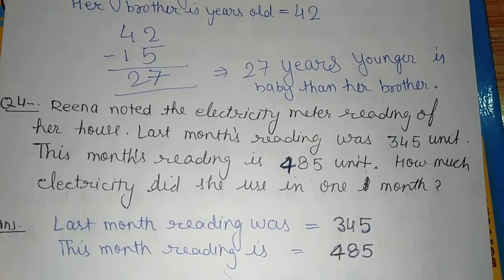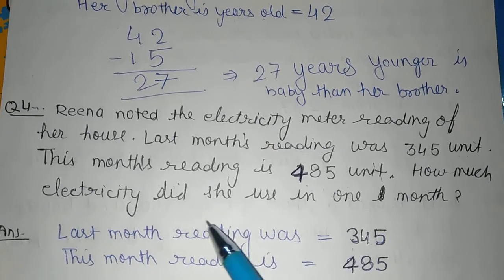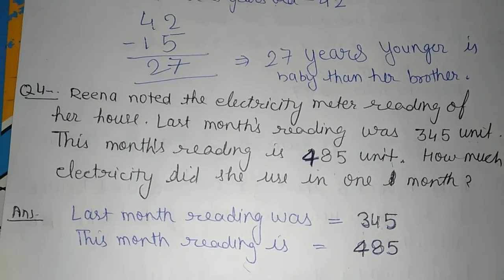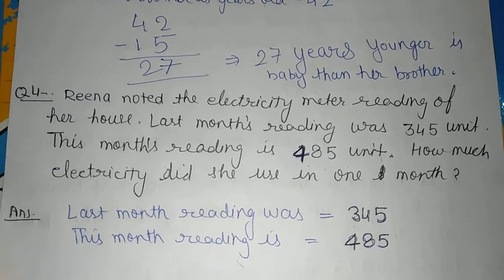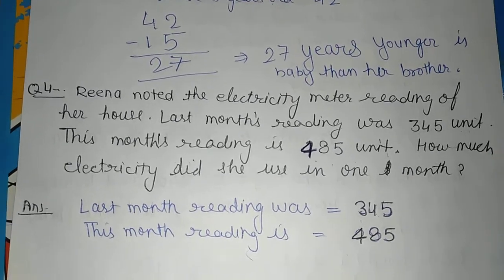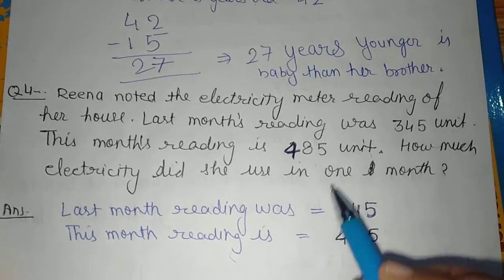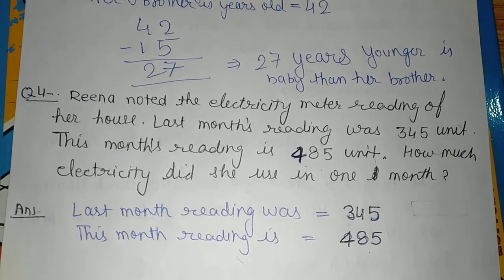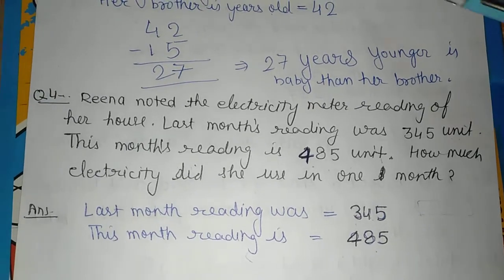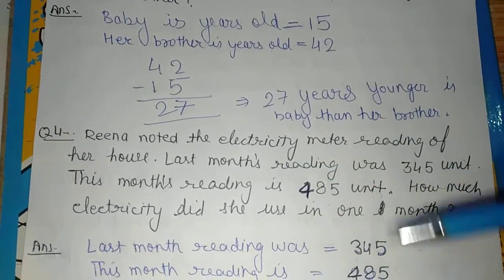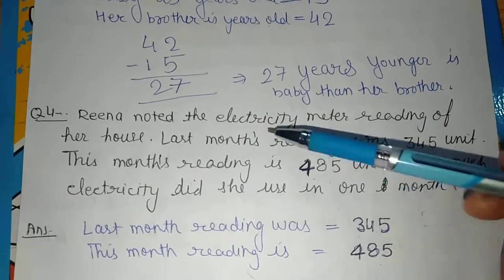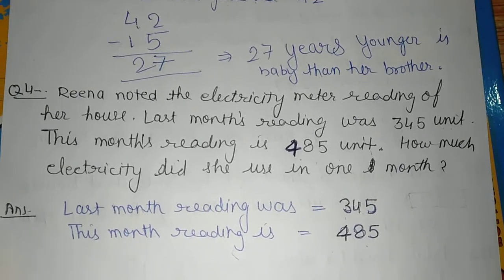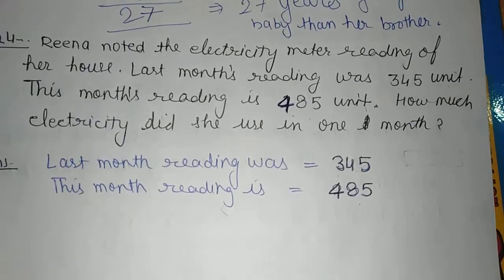You need to understand the sense of all questions — age, runs, shopping. For this electricity question, you have to check the reading with mom or papa, where it is written, and from this reading the electricity bill comes. So let's solve it — we will come back to the question. Last month's reading was 345 units, and this month's reading is 485 units. How much was used?